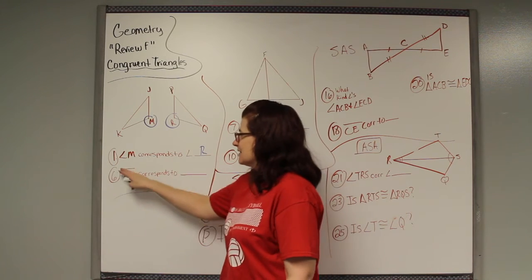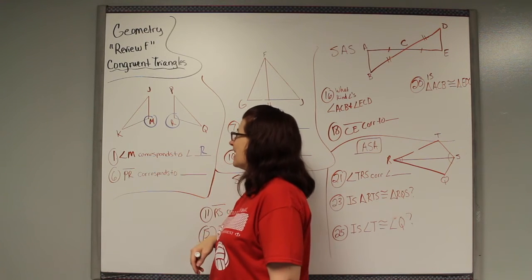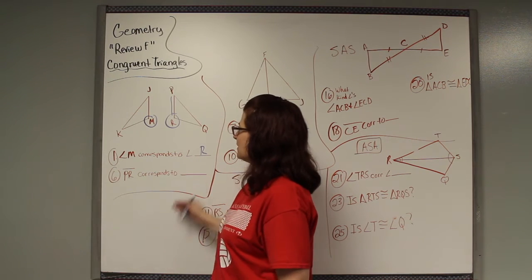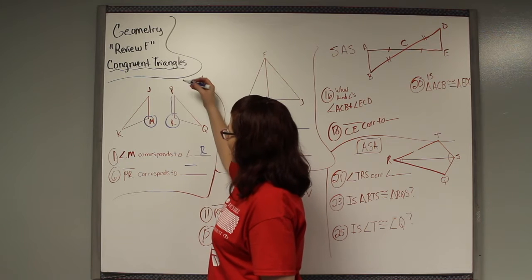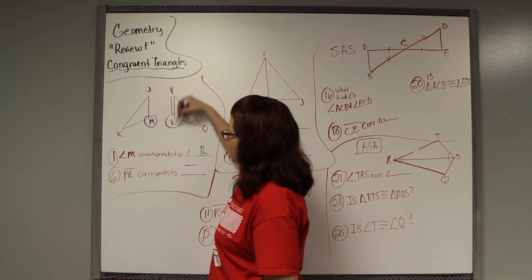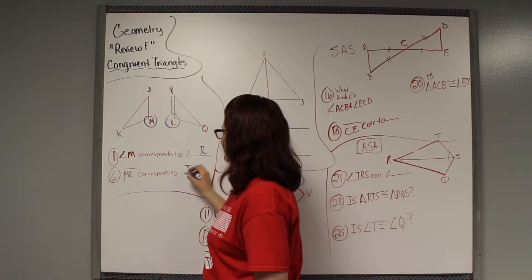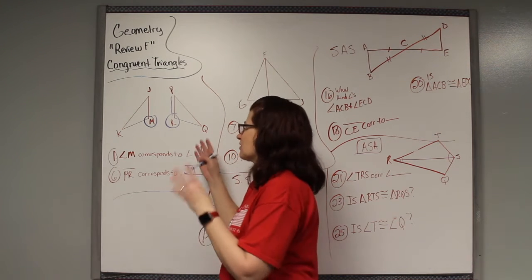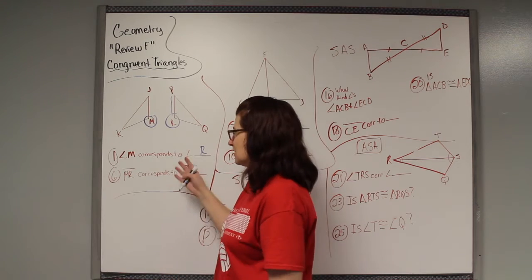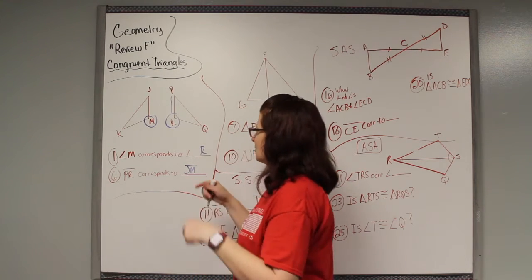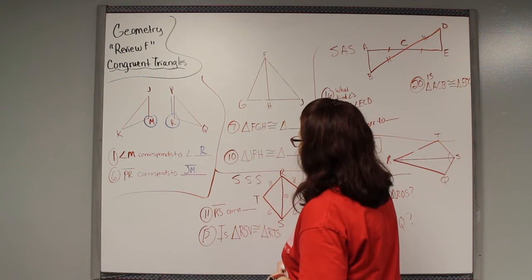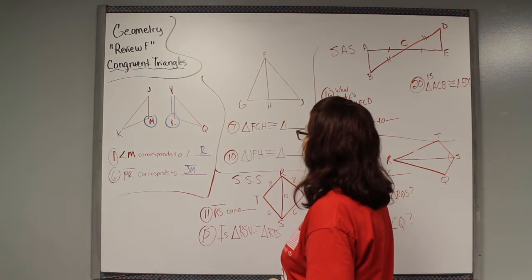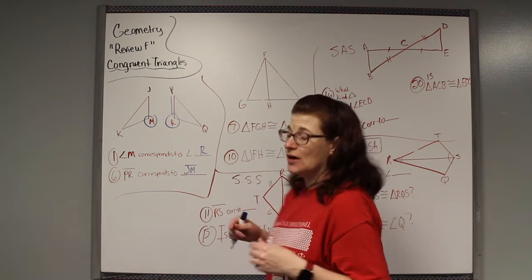This side PR corresponds to what other side? If they started with P and went down, you've got to start with J and go down — so side JM. That's the first part, just learning corresponding parts. There are about six questions with that; just match them up and write them in.